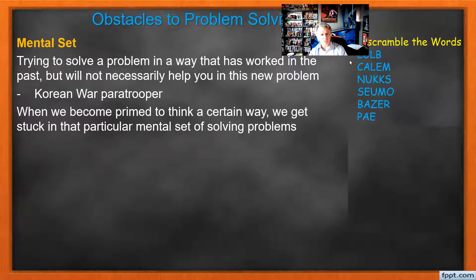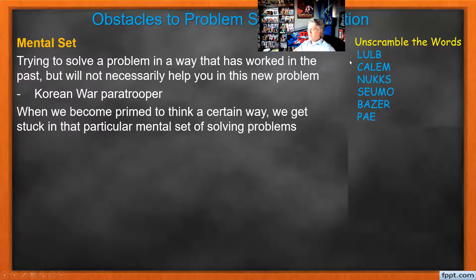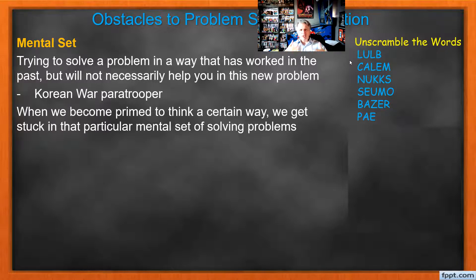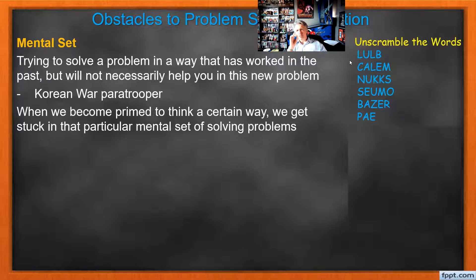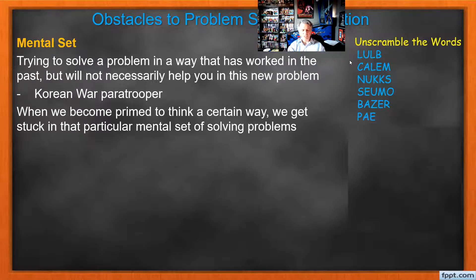We get a mental set — trying to solve a problem in the way it's always worked in the past, but it doesn't necessarily help with the new problem. There's a story of Korean War paratroopers where they ran out of right-handed parachutes. So they gave their most experienced paratrooper a left-handed one, telling him to pull with his left hand instead of his right. He jumped, fell to his death. It would have been better giving the left-handed parachute to an inexperienced paratrooper, because this guy had done hundreds of jumps always pulling right — it was hard for him to change. When he was found, his hand was ripped down to the bone and his jacket was shredded because he kept doing it the old way. He got locked into that mental set.